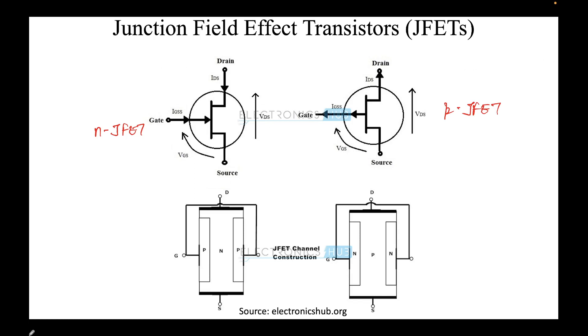This is a junction field effect transistor, meaning there are junctions in here. For N JFET, you have an N-type substrate in which there are two P-type regions—these are the gates. So the gate is P-type while drain and source are N-type. Effectively, the current flow will happen in this vertical N-type region, hence N JFET. Similarly, for P-type, the gate is N-type and the drain and source are P-type, with conduction due to holes. For our discussion, we'll restrict ourselves to N JFET because the discussion remains the same; just the current direction is reversed.